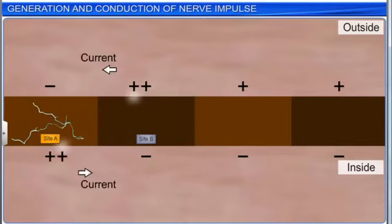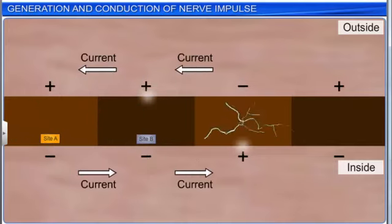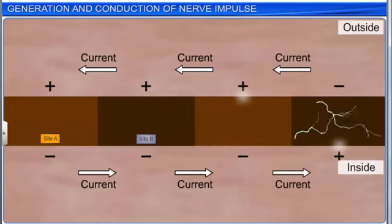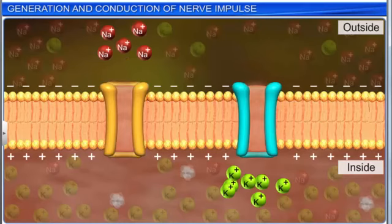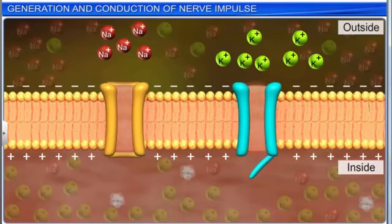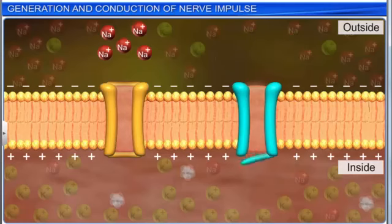The sequence repeats along the length of the axon for the impulse to be conducted. At the peak of action potential, the permeability of the membrane to sodium ions decreases, while it becomes more permeable to potassium ions. This is because sodium channels start closing and potassium channels start opening.